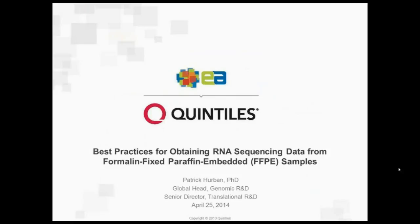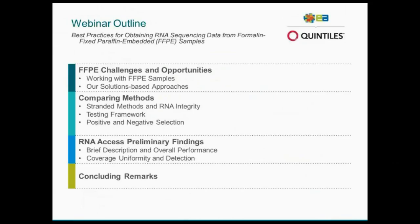I would like to tell you just a little bit about EA, but first let me give you an outline of today's webinar. I'm going to talk about the challenges and opportunities that we face with FFPE samples, how we work with FFPE samples, and what our particular solutions-based approaches are. Then I'm going to talk about comparing different methods for RNA sequencing and why certain methods are more suitable than others. Finally, I'm going to tell you about a relatively new method called the TruSeq RNA Access method, which was developed recently by Illumina and that we obtained early access to. We've done some preliminary testing of this method, and we find it to be very exciting, and I'd like to share that with you today.